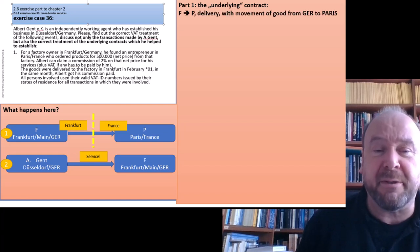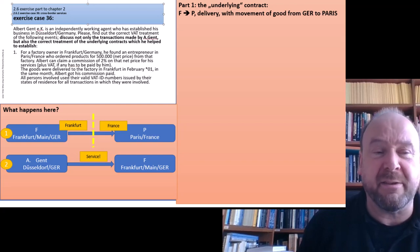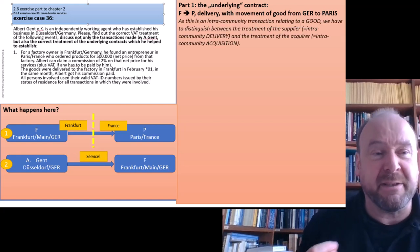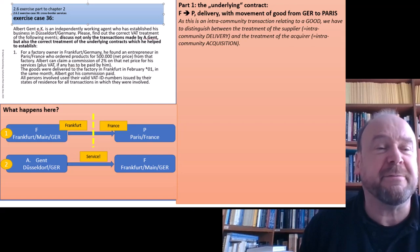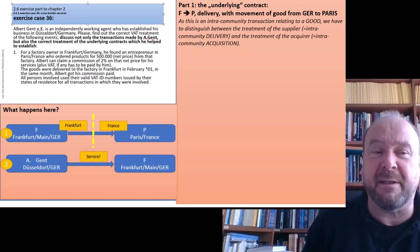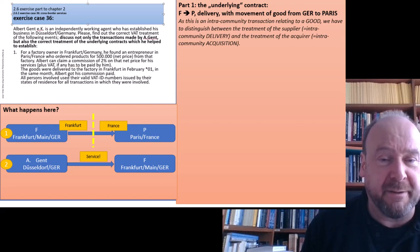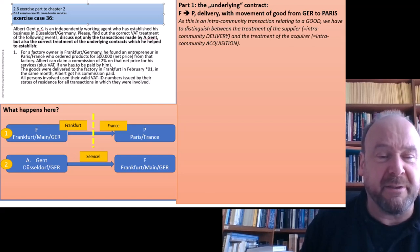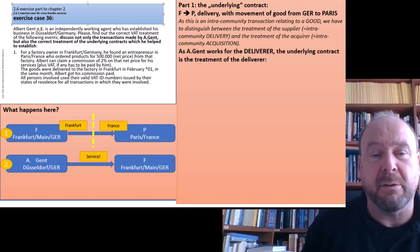First, we think about the underlying contract — the delivery from F to P, with movement of goods from Germany to Paris. As this is an intra-Community transaction within the EU with the goods crossing the border, we have to remember the rules for cross-border deliveries within the EU. We have to look to both the supplier and the acquirer in their respective countries. The agent works for the deliverer, so the underlying contract relates to the deliverer's side.